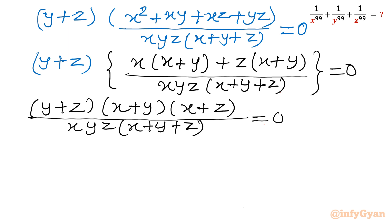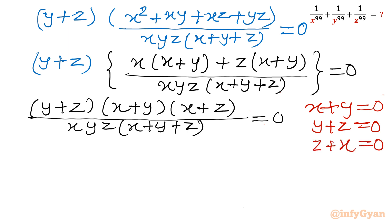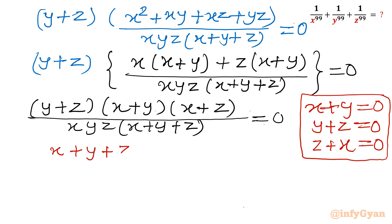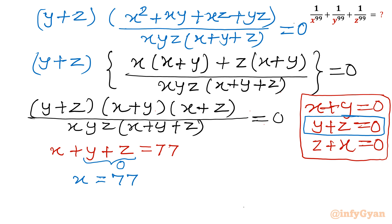From here we get three possible equations: x plus y equal to 0, y plus z equal to 0, or z plus x equal to 0. Let us check which ones are consistent. Our first equation was x plus y plus z equal to 77. Putting y plus z equal to 0 gives x equal to 77.